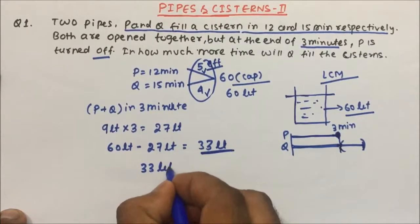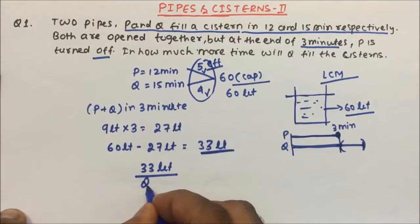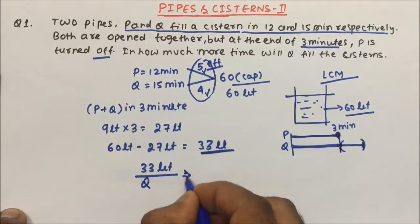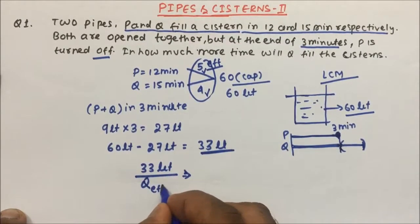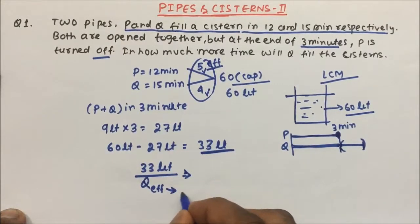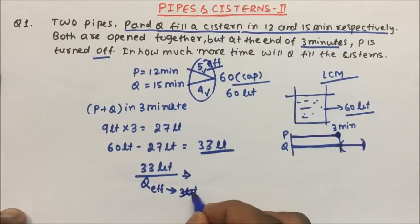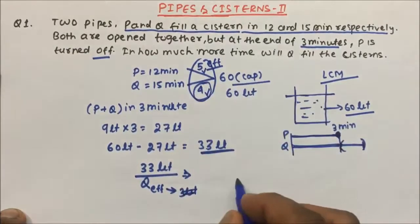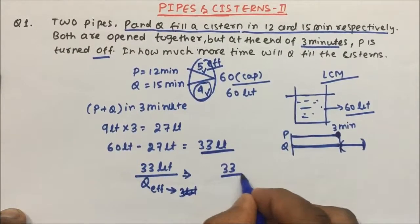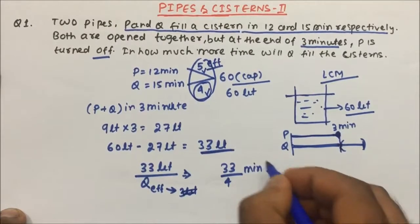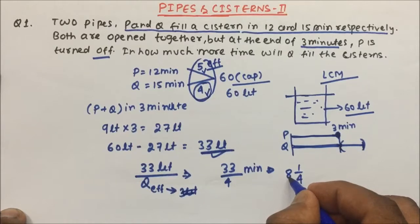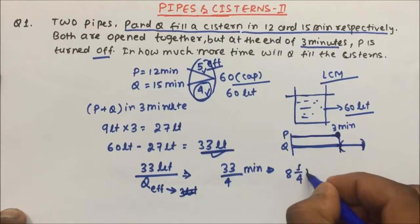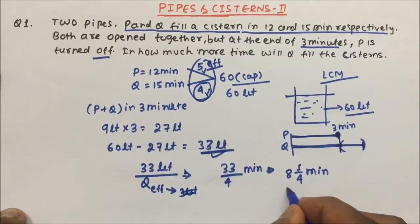This 33 liters has to be filled by Q alone, since P is closed. The efficiency of Q is 4 liters per minute. So the time Q takes is 33 divided by 4 minutes. We can write this as 8 and 1/4 minutes, since 4 times 8 is 32 and 32 plus 1 is 33. So Q takes 33/4 minutes to fill the remaining cistern.